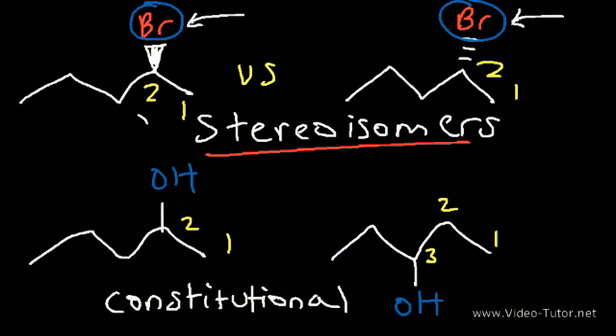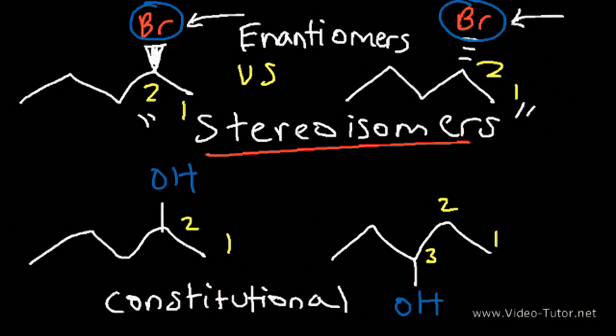This particular stereoisomer is known as an enantiomer. Enantiomers are basically non-superimposable mirror images of each other. Notice that the chiral center is different in this molecule compared to this one — the chiral center has been reversed. Whenever you change all chiral centers, you're going to have an enantiomer.